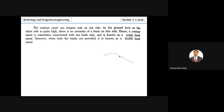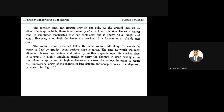If embankments are constructed on both sides, it is called a double bank canal. Contour canals are aligned along existing contours, but it is not necessary to follow only one contour. Some slope is provided for gravity flow, and the alignment may shift from one contour to another as required by design.